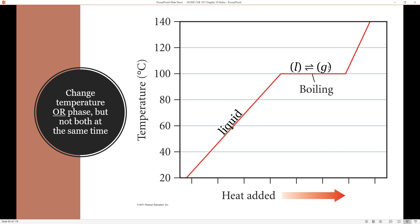In the beginning we're all liquid, but as we continue to add heat we establish an equilibrium between the liquid and gas phases. Once we get all the way to that point, we can assume we have transformed all of our liquid water into gas phase water — the boiling process is complete. Now that we have a gas, we can increase the temperature of the gas instead of putting all the heat energy into changing the phase.